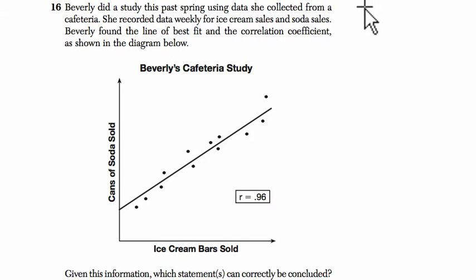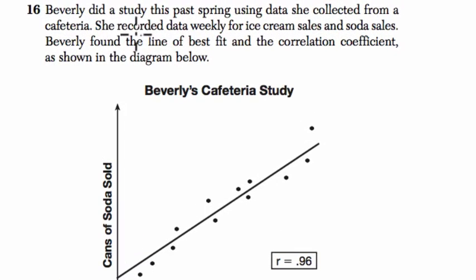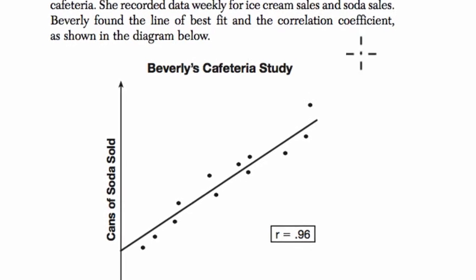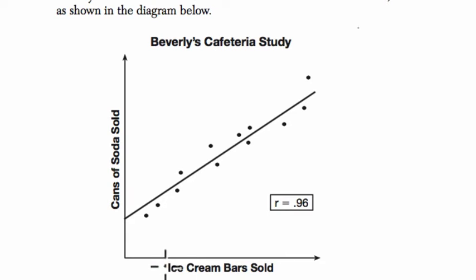I couldn't fit it all on the screen, but feel free to pause it when you need to. Alright, so let's read it. Beverly did a study this past spring using data she collected from a cafeteria, and she recorded data weekly for ice cream sales and soda sales. So we have the relationship between ice cream sold and soda sold.